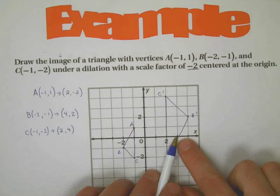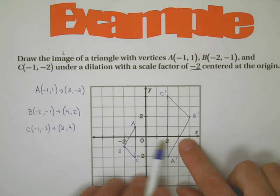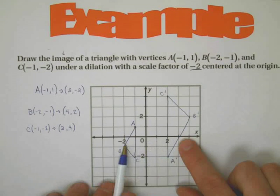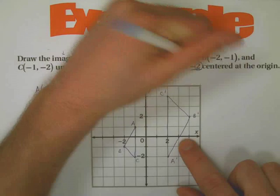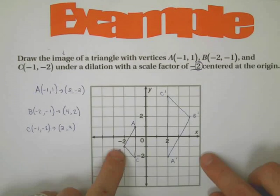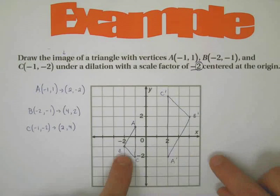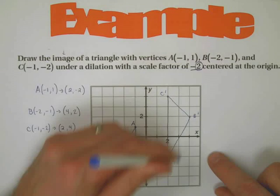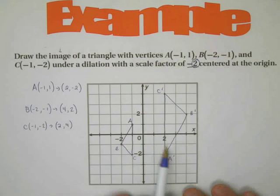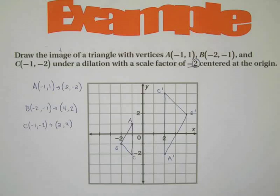But what you'll notice is, see, those are actually the same triangle. But not only is this one twice as big, the image is twice as big as the pre-image, I know that because of the two involved, but it's also been rotated 180 degrees.